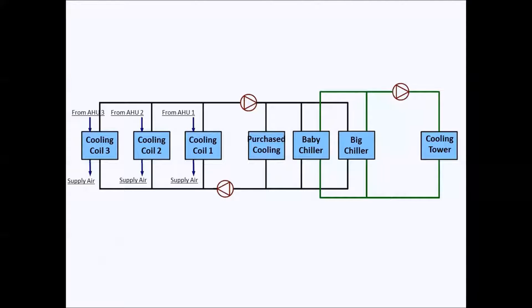First we have to make a simple HVAC line diagram. This is a simple HVAC line diagram for this particular HVAC. There are three AHUs, this means cooling coil of all the AHUs, and so there would be three cooling coils here.